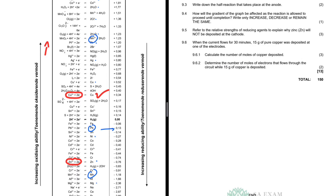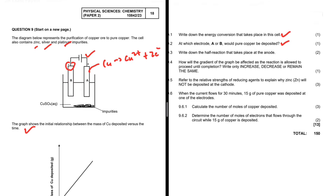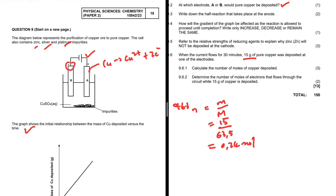9.6.1: when current flows for 30 minutes, 15 grams of copper was deposited. Calculate the number of moles of copper deposited. Number of moles equals mass divided by molar mass. The mass is 15 g and the molar mass of copper is 63.5 g/mol, giving 0.24 moles of copper.